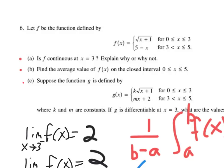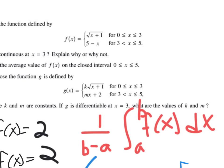Okay, so now this last part. So different function G is defined like this, where K and M are just constants. 1, 2, 3, 4, negative 1, negative 2, something like that. Not variables. If G is differentiable at x equals 3, what are the values of K and M?